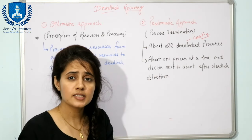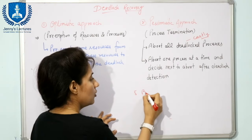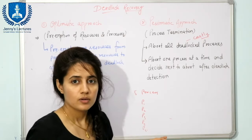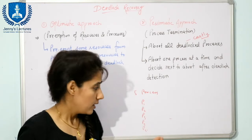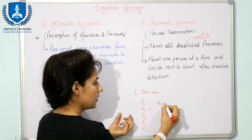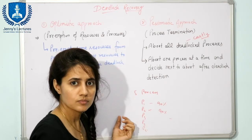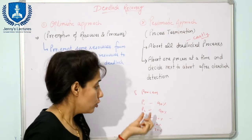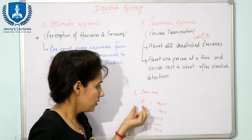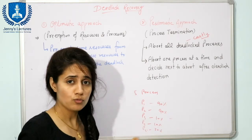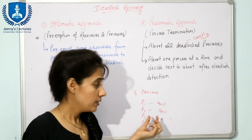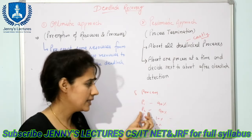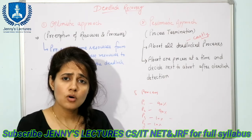For example, suppose five processes P1, P2, P3, P4, and P5 are in a deadlocked state, and P1 and P2 have completed 90% of their execution, while others are at 10% and 20%. When you abort all the processes, P1 and P2 will have to restart their execution from the beginning, even though they had almost completed — so it is not a good idea.